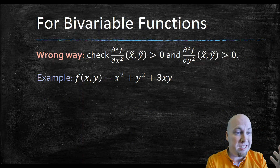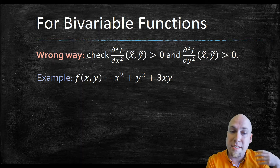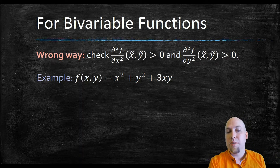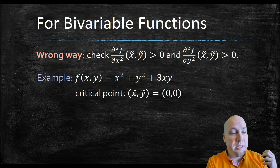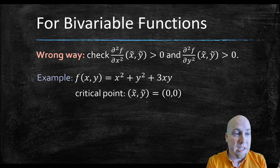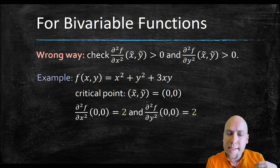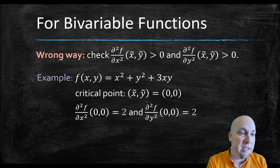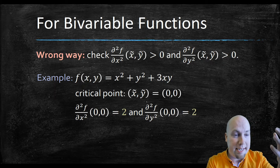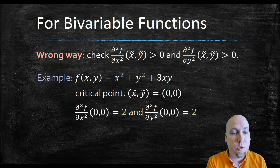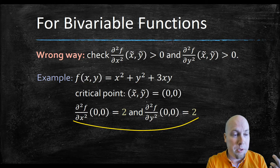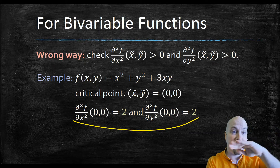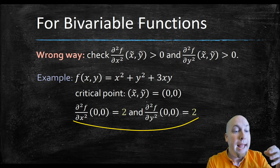I'm going to give you an example to see why that doesn't work. Consider the function x² + y² + 3xy. It's straightforward to compute that the only critical point is at (0, 0). The second x partial and second y partial are just constant functions equal to 2 everywhere. Since 2 > 0 in both cases, our guess might be that the critical point is a minimum.